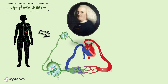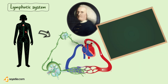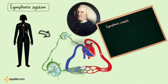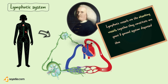In the 18th century, William Hunter, a Scottish anatomist, concluded: 'Lymphatic vessels are the absorbing vessels all over the body, and together they constitute one great and general system dispersed throughout the whole body for absorption.' That shows the lymphatic system has a very direct link with absorption, which we are going to understand later in this video in detail.